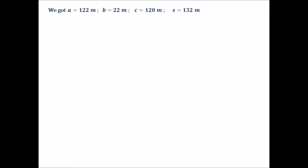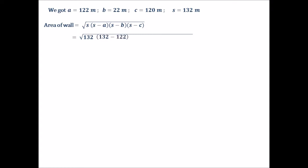Now we have A equals 122m, B equals 22m, C equals 120m, and semi-perimeter S equals 132m. To find the area, we will use Heron's formula: Area equals under root of S(S minus A)(S minus B)(S minus C). Putting in the values: under root of 132 into (132 minus 122) into (132 minus 22) into (132 minus 120), which gives us under root of 132 into 10 into 110 into 12.